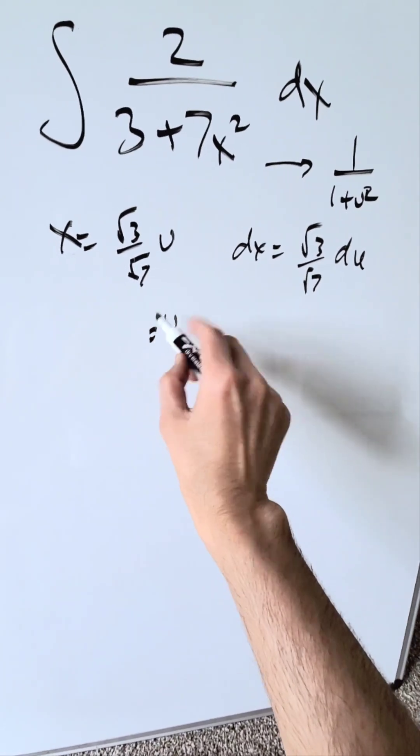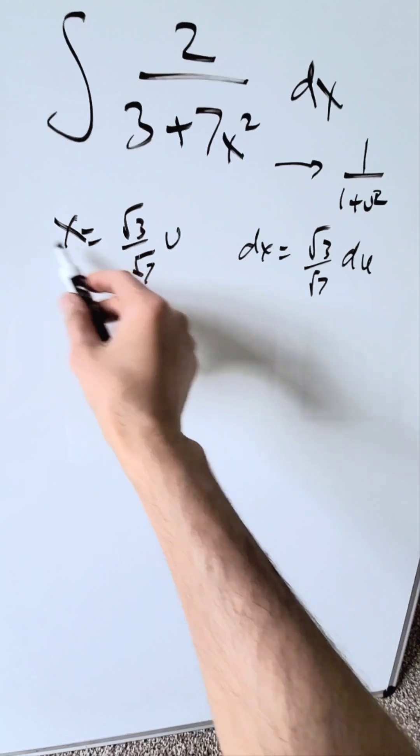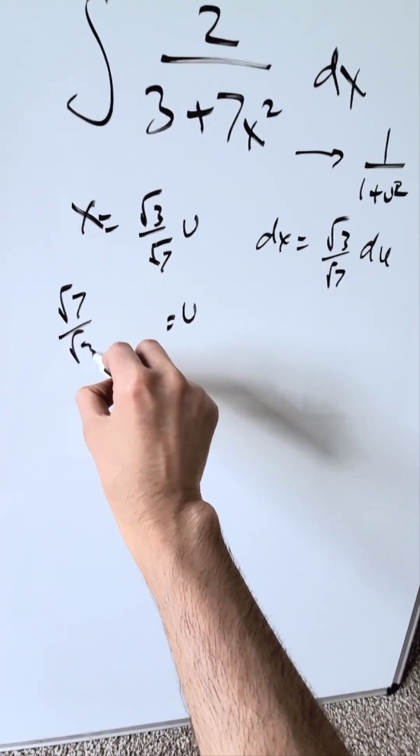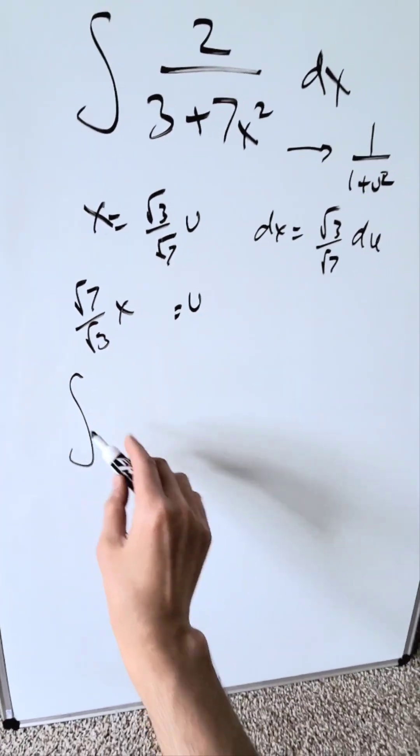Solve here for u because it's an indefinite integral. We have to do a substitution. Push everything on the other side. You'd have root 7 over root 3 x. Bring in these substitutions.